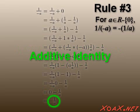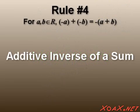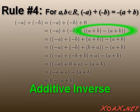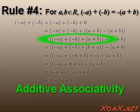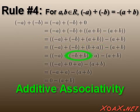Finally, the proof is completed via the additive identity. The next rule is called the additive inverse of a sum. We begin the proof by applying the additive identity. Next, we use additive inverses. Then we use additive associativity. Then we apply additive commutativity. After that, we use additive associativity again.